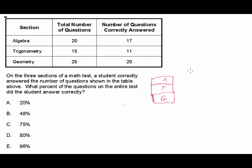In the algebra section there are a total of 20 questions and the student answered 17 correctly. In trigonometry, there were 15 questions total and the student answered 11 correctly. In the geometry section there were 25 questions total and the student answered 20 correctly.